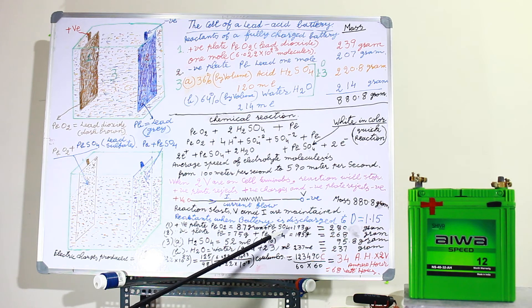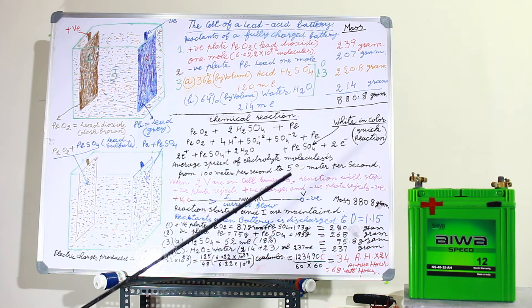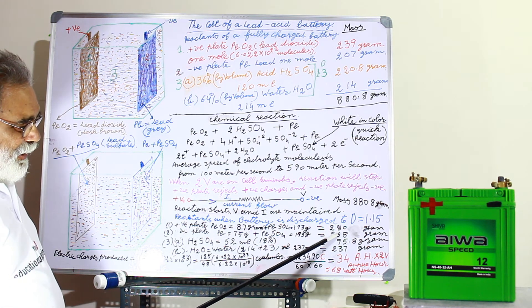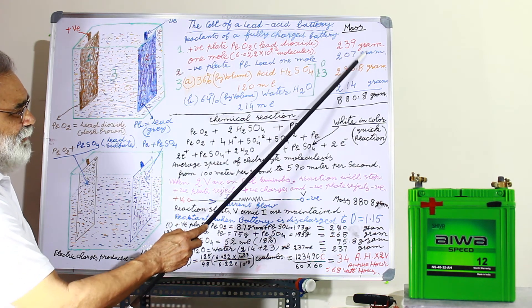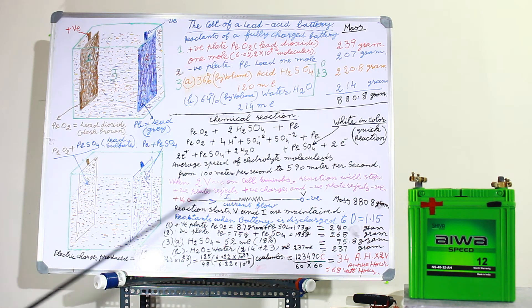And on the negative plate, this will be 75 grams of lead and lead sulfate will be 193 grams. As a result it will get 268 grams of weight. So from 207 grams this weight will increase. From gray it will become a grayish white. And the positive plate will be brownish white, from brown to brownish white. And what happens to the H2SO4?